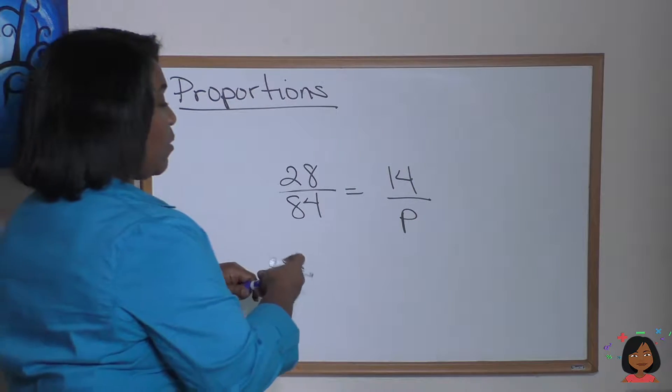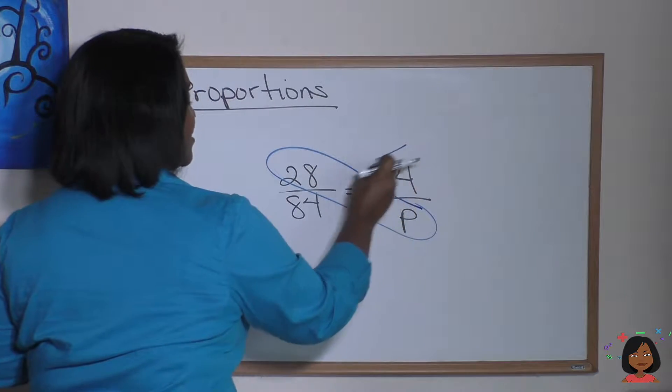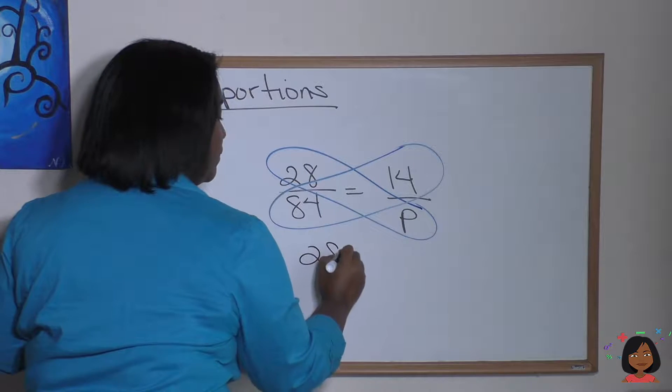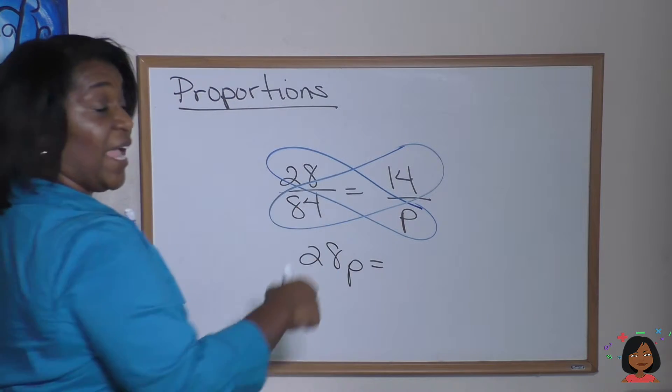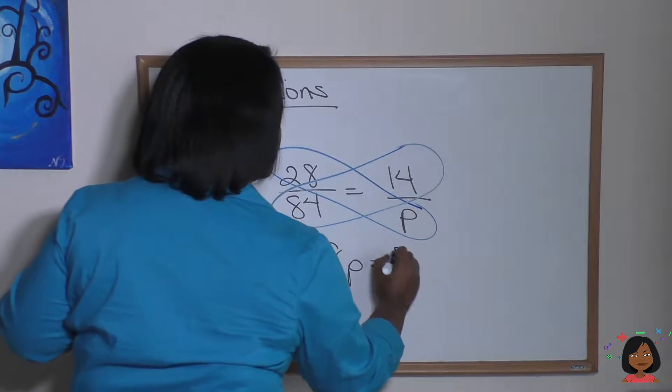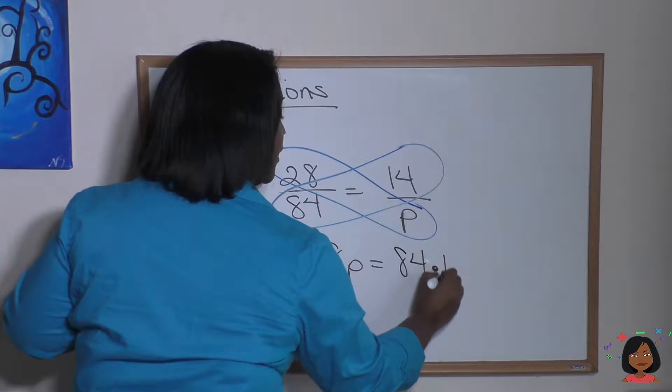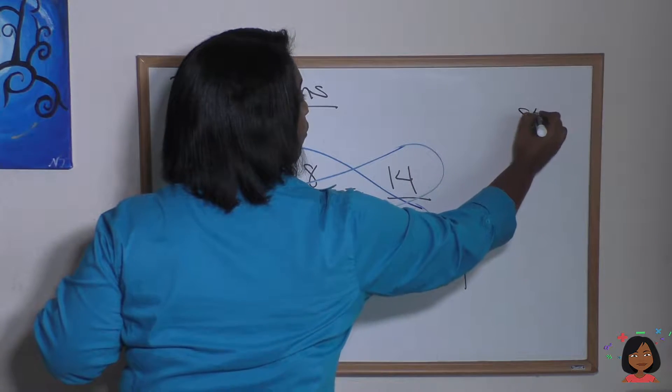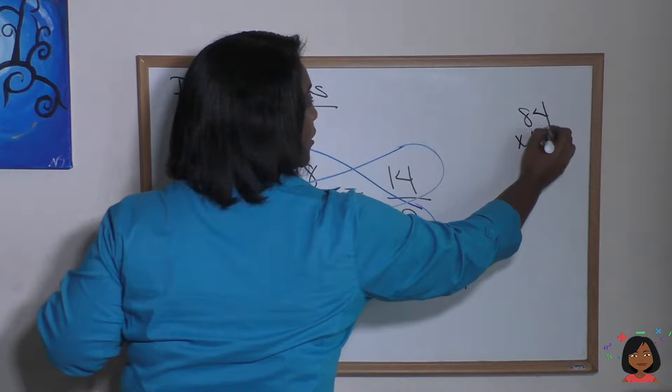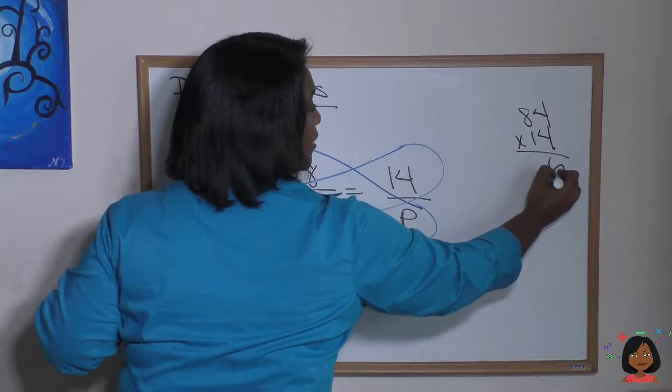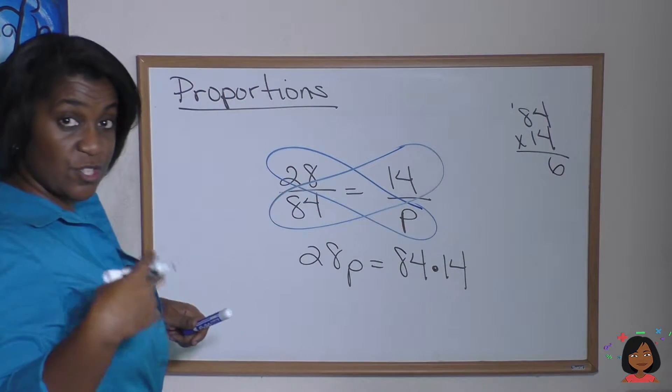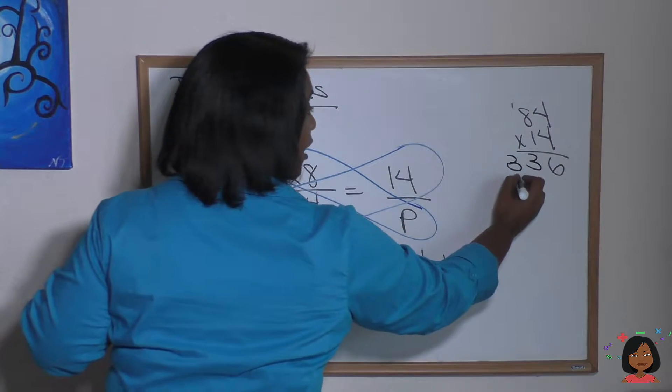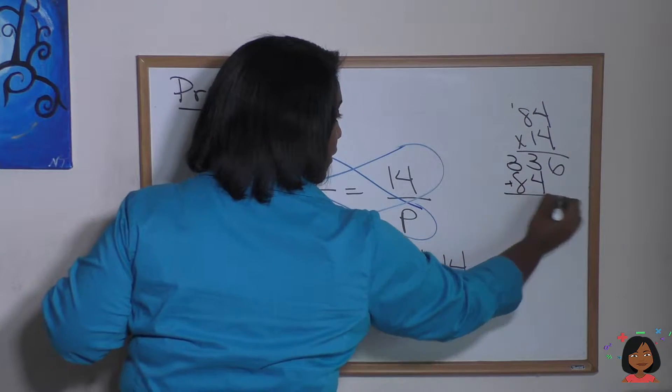Remember, we're going to cross multiply and set them equal to each other. 28p equals 84 times 14. Now, I don't know about you, but I don't know that in my head. So let's do it over to the side. 84 times 14. 4 times 4 is 16. 8 times 4 is 32. And 1 is 33. And then we have 84 times 1.